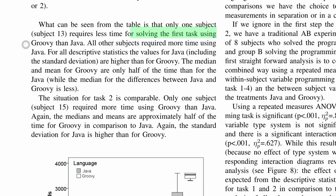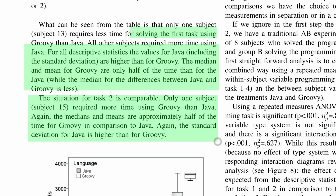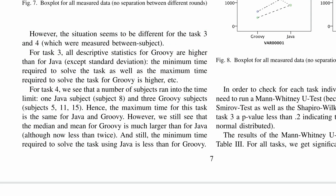The results were somewhat surprising. On the first task, it was almost twice as fast to solve the problem in Groovy, the dynamically typed language. The authors got a similar result for the second task as well. Remember that the first two tasks dealt with nested lists requiring complex generic type descriptions.